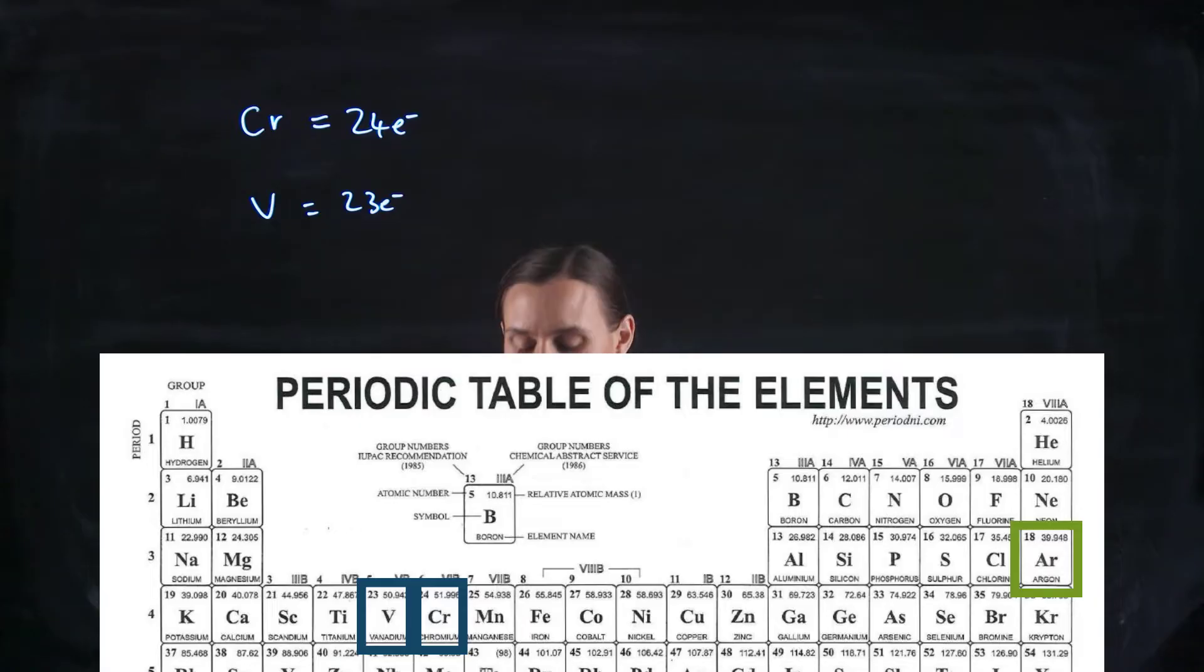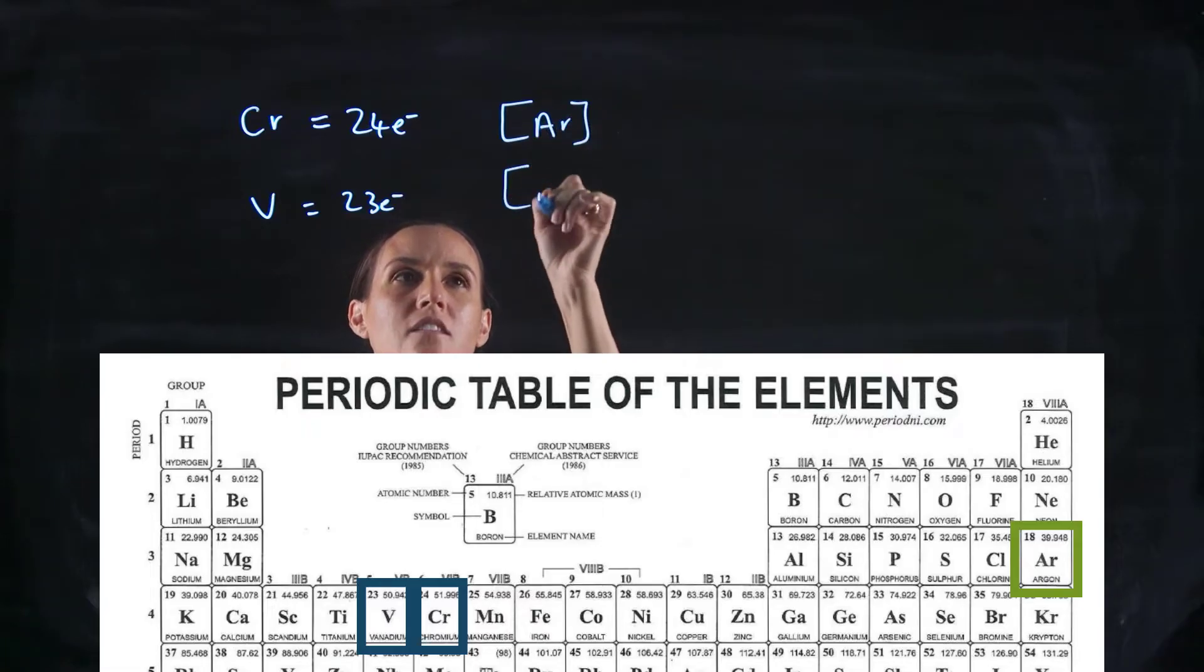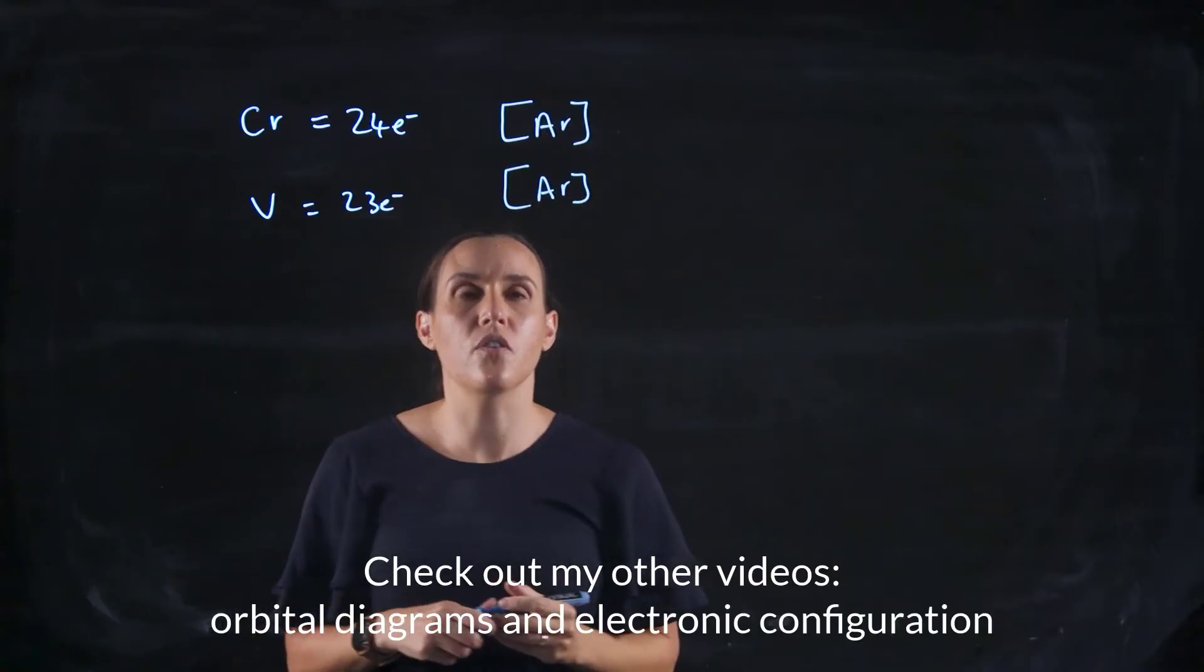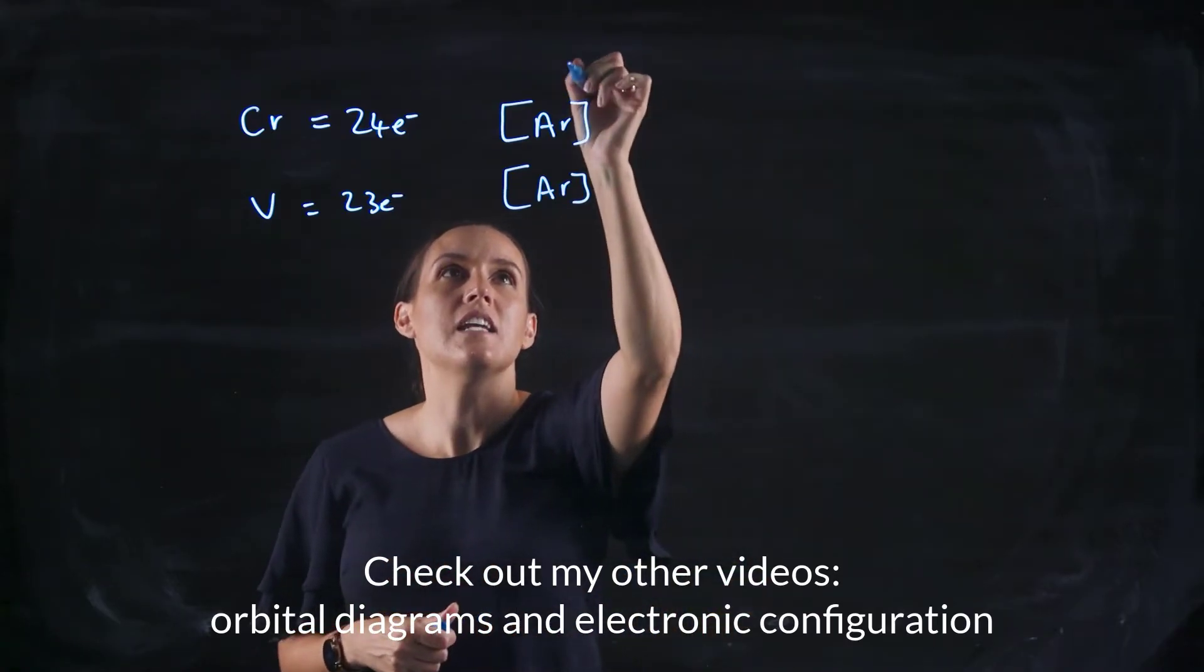So for chromium and vanadium, that would be argon. Argon would account for the first 18 electrons.